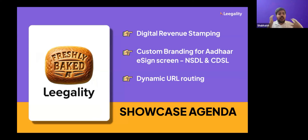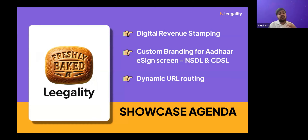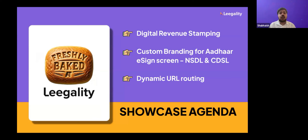Moving on to today's agenda, we'll be showing you three new features. First is India's only digital revenue stamping system. Second is custom branding for the Aadhaar eSign screen. And last is a way to dynamically route signers to a specific webpage after they're done signing a document — which will be useful for lenders and for executing KFS as per the latest RBI guidelines.